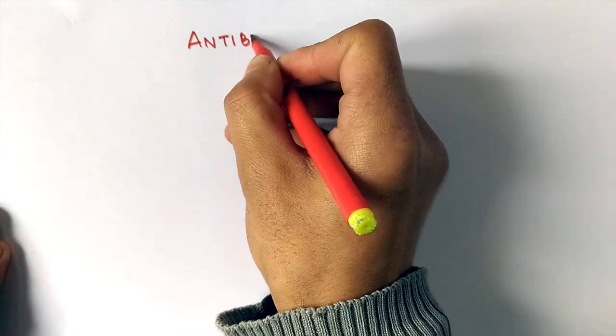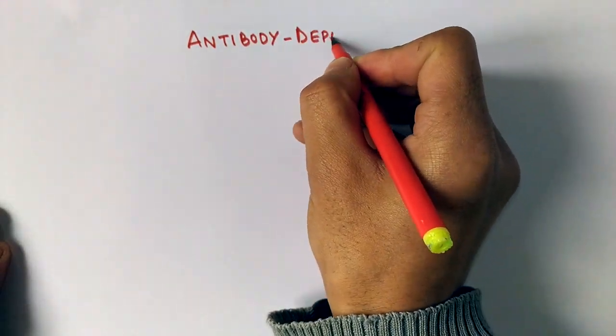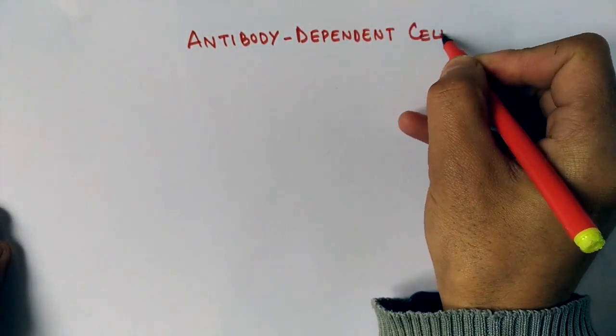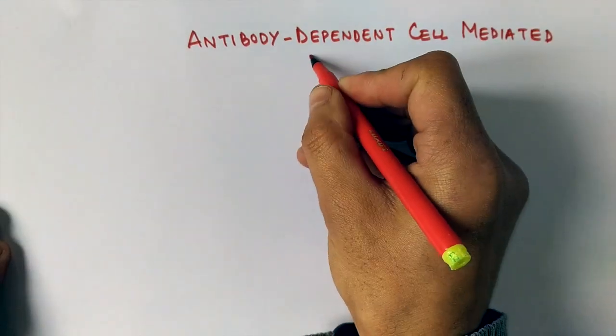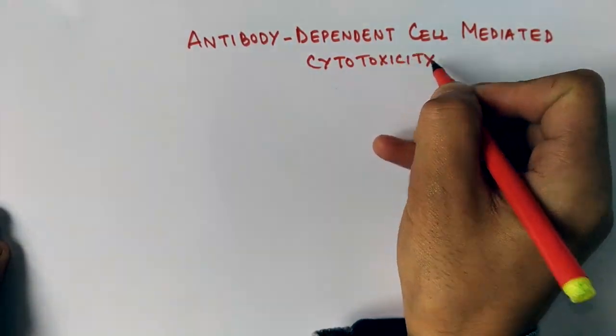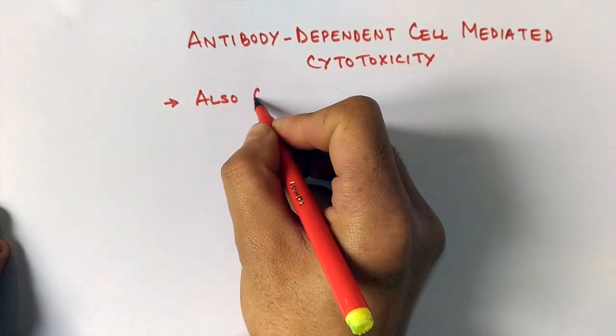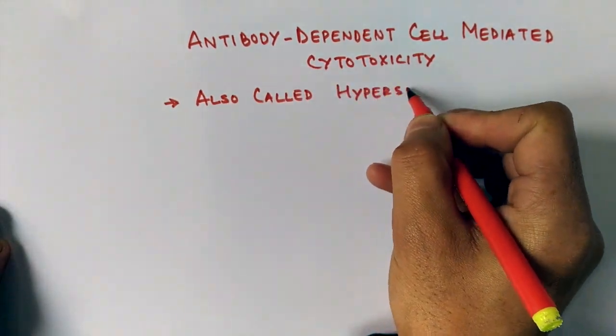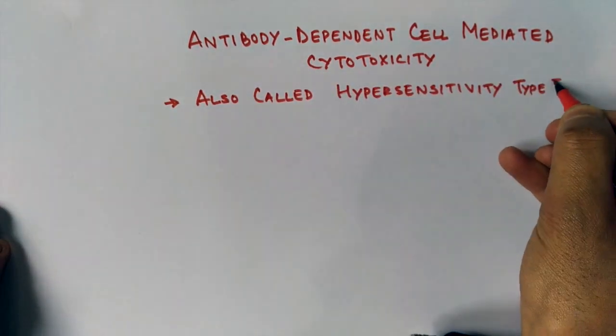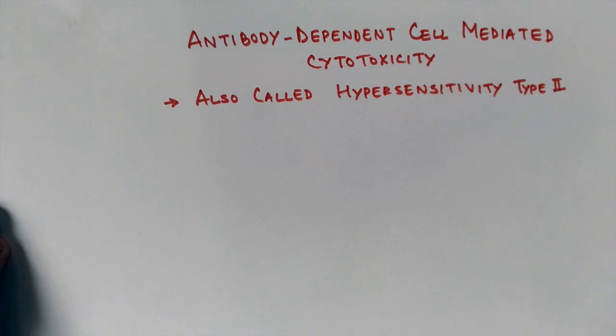Hello friends, today we'll be discussing antibody-dependent cell-mediated cytotoxicity, also called hypersensitivity type 2. Hypersensitivity type 2 has two pathways. As I've already discussed, the first pathway is via complement, and this pathway is antibody-dependent cell-mediated cytotoxicity.